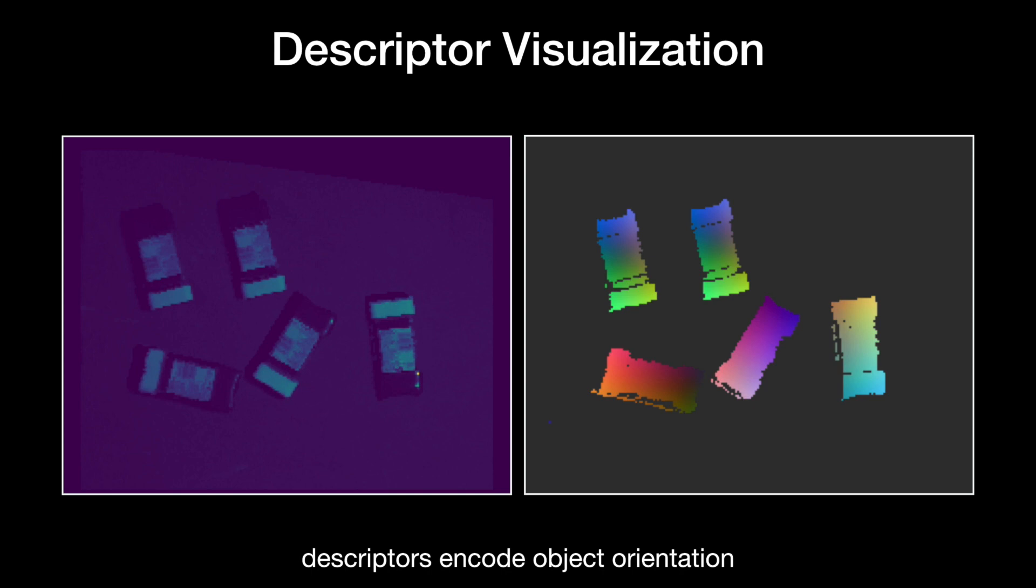To explore what the object descriptors generated by the matching network have learned to encode, we compute and visualize the T-SNE embedding of the learned feature descriptors for different kits. Specifically, we reduce the 64-dimensional descriptor vectors to 3 dimensions for color-space visualizations. We observe three things.